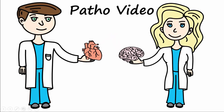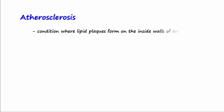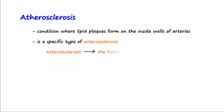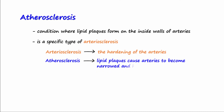Welcome to another patho video. The topic of this video is atherosclerosis. Atherosclerosis is a condition where lipid plaques form within the walls of arteries. It is a specific type of arteriosclerosis, which is the generalized condition of hardening of arterial walls, whereas atherosclerosis is specific to the buildup of lipids that cause arterial walls to narrow and restrict blood flow.